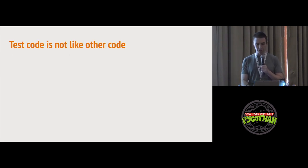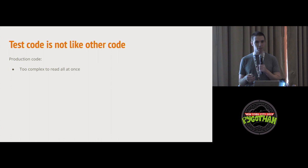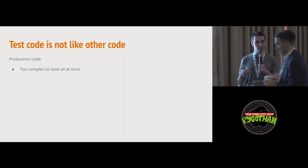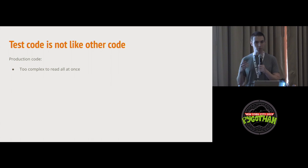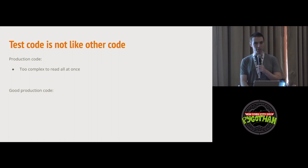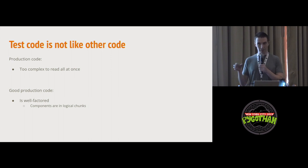Test code is not like other code. When we think about production code, there's no production code that is small enough to fit in just 10 lines of code, except for a trivial hello world. For most production applications it's thousands to often millions of lines of code — so much logic that developers can't fit it all in their head at once. We've developed mechanisms in languages like functions, classes, polymorphism, and inheritance to manage that complexity and abstract it into digestible chunks. Good production code is well-factored, allowing us to think in those little digestible chunks.